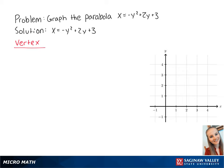Since the equation is in terms of y, the vertex formula is going to be reversed. So we get y equals negative 2 over 2 times negative 1, which is equal to 1. If we plug 1 into the original equation, we get x equals negative 1 squared plus 2 times 1 plus 3, which is equal to 4. So the vertex is at 4, 1.